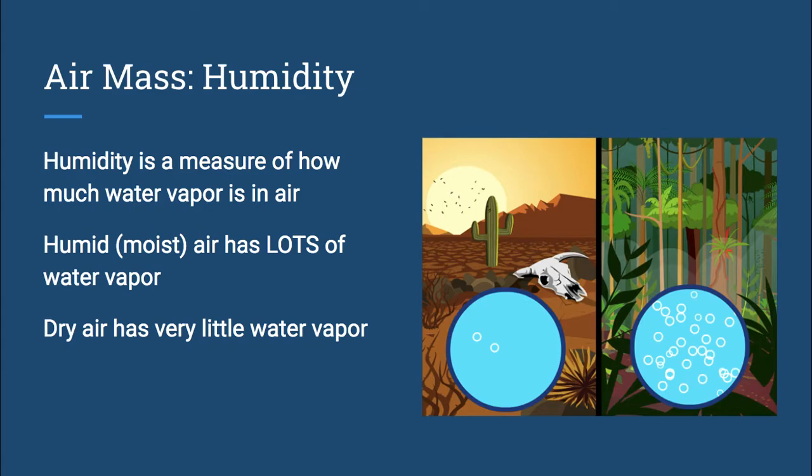Humidity is a measure of how much water vapor is in air. Humid air, or moist air, has lots of water vapor. In the diagram on the right, think about a tropical rainforest. In the circle, you can see that there's lots of water vapor in that air. That's going to be very humid, or very moist air.